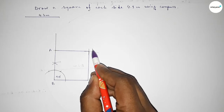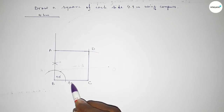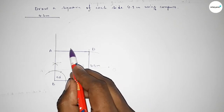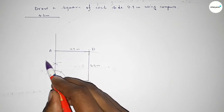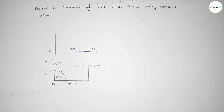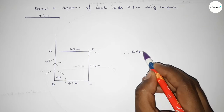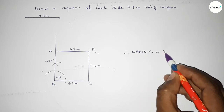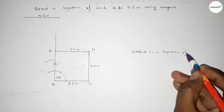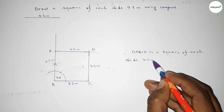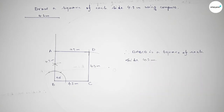Taking here point A and here point D. This side is 4.3 centimeters, this side 4.3 centimeters, this side 4.3 centimeters, and this side also 4.3 centimeters. Therefore ABCD is a square with each side 4.3 centimeters. This is the process to construct a square. Thanks for watching — if this video is helpful, please share it with your friends.